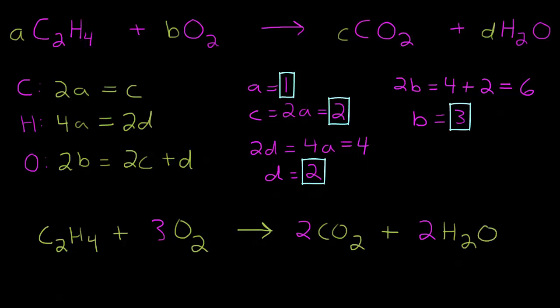So now let's check and make sure everything adds up. We have 2 carbons on the left and 2 carbons on the right. We have 4 hydrogens on the left and 2 times 2 equals 4 hydrogens on the right. We have 3 times 2 equals 6 oxygens on the left. 2 times 2 equals 4 oxygens there plus 2 more there. We have 6 oxygens on the right, so our equation is balanced.